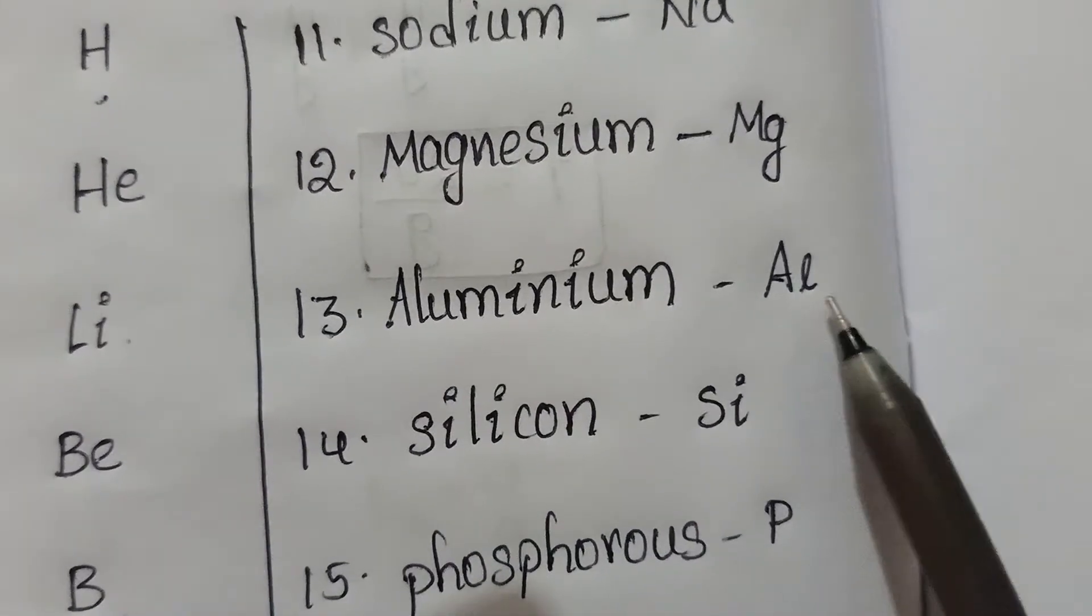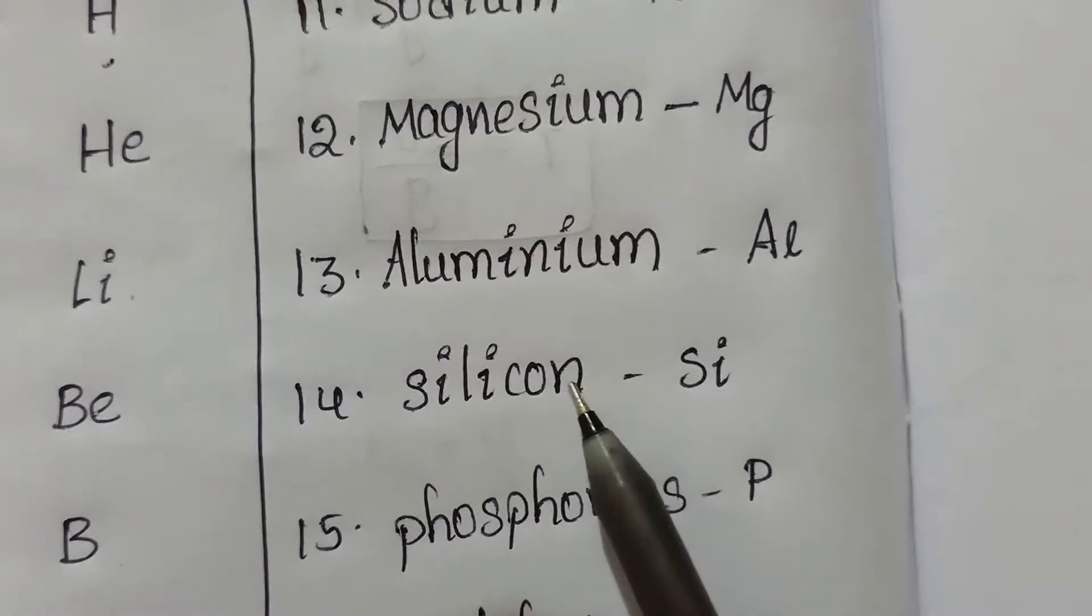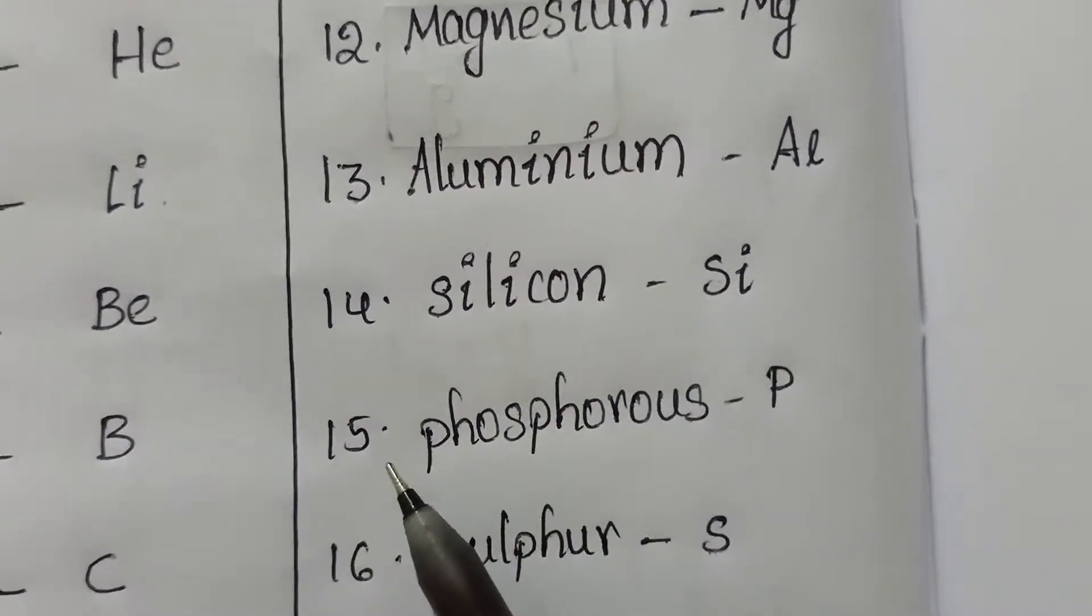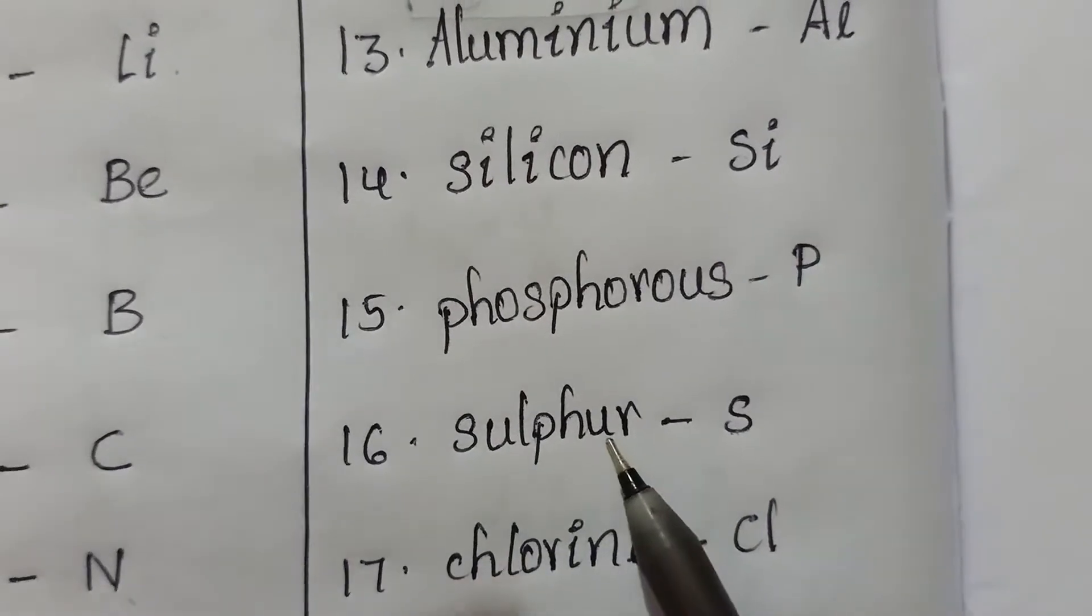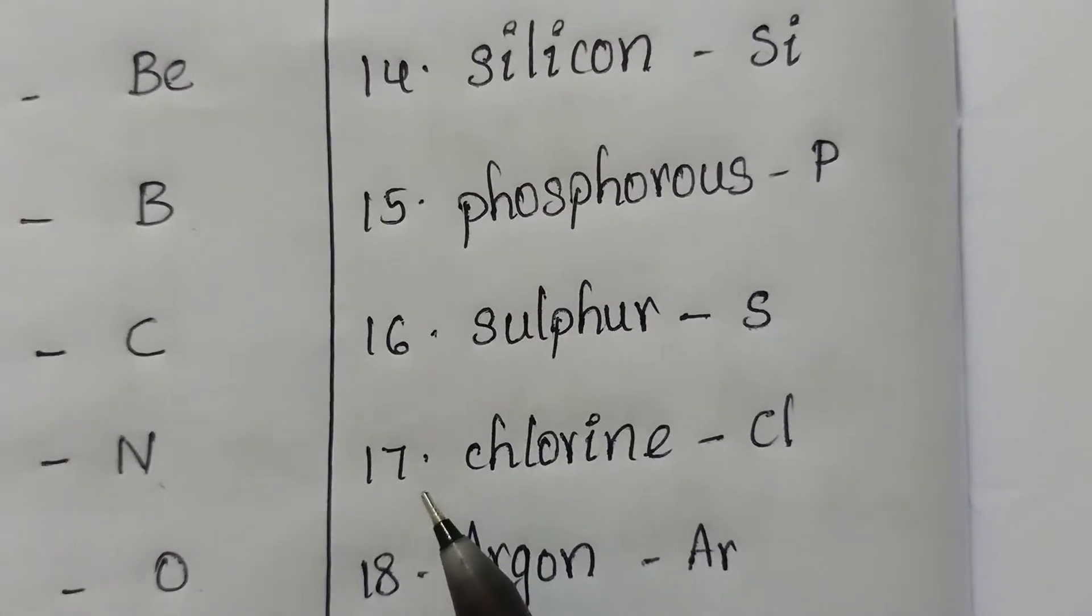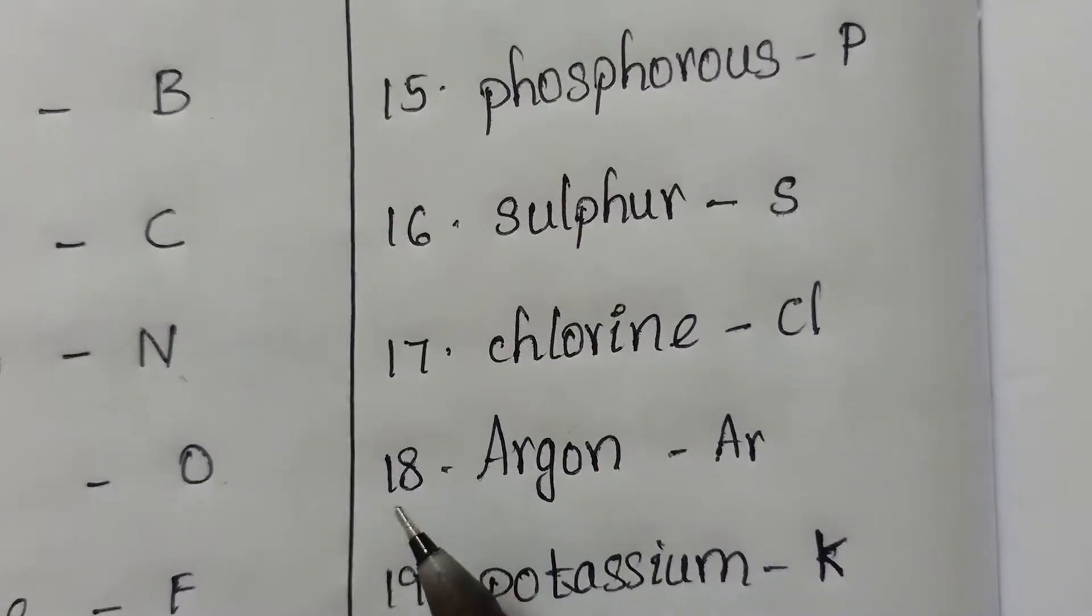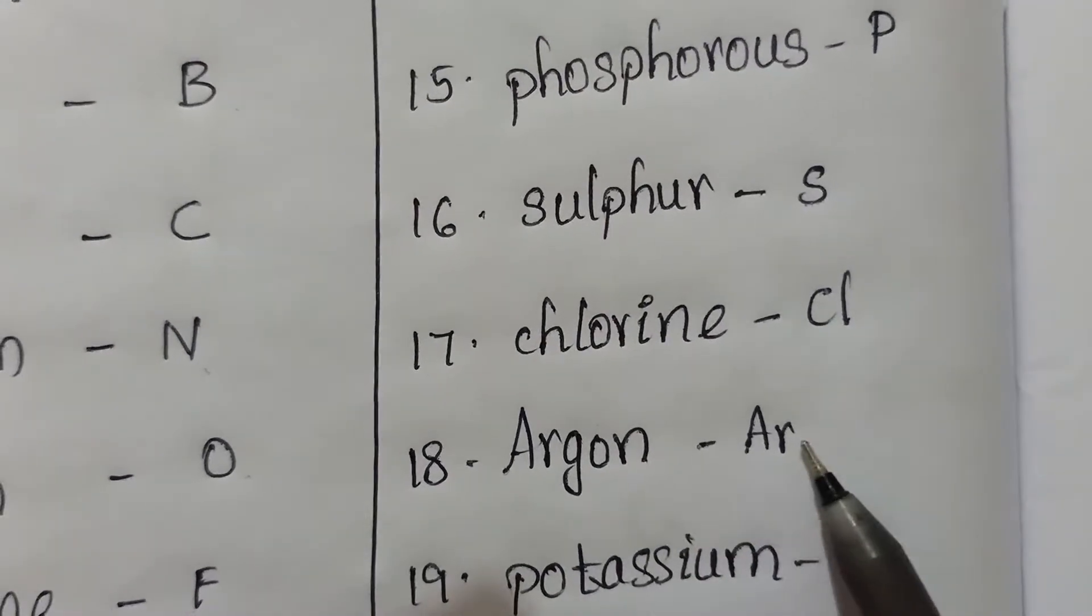Thirteenth one, aluminium, symbol AL. Fourteenth one, silicon, symbol SI. Fifteenth one, phosphorus, symbol P. Sixteenth one, sulfur, symbol S. Seventeenth one, chlorine, symbol CL. Eighteenth one, argon, symbol AR.